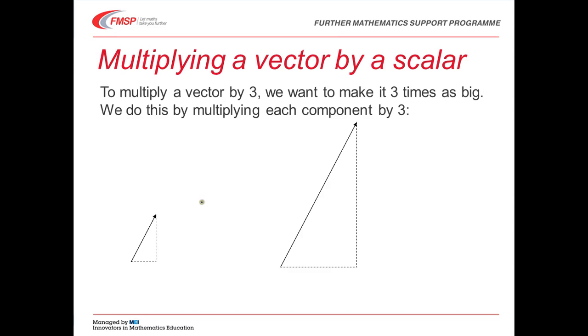We can also multiply vectors by scalars. We want to make it three times as big. Then, we just multiply each component by three. So, I've got the vector 2, 3. That's 2 along and 3 up. I make it three times as big. That's going to be 6 along and 9 up. So, three times that is just 6, 9.